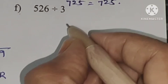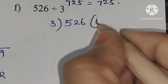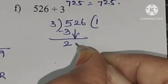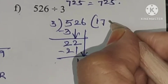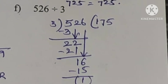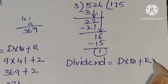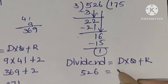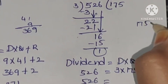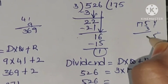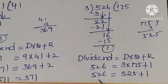526 divided by 3: 5 divided by 3 gives 1 remainder 2. 3 ones are 3, 5 minus 3 is 2. Bring down 2, making 22. 3 sevens are 21, subtraction gives 1. Bring down 6: 3 fives are 15, remainder 1. Checking: 526 equals 3 into 175 plus 1. 3 times 175: 3 fives are 15, 3 sevens are 21 plus 2 is 23, 3 ones are 3 plus 2 is 5. So 525 plus 1 equals 526.